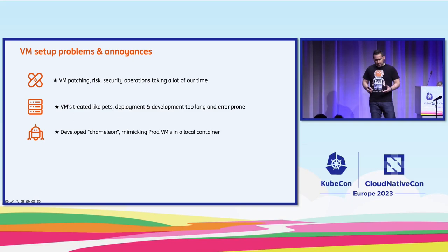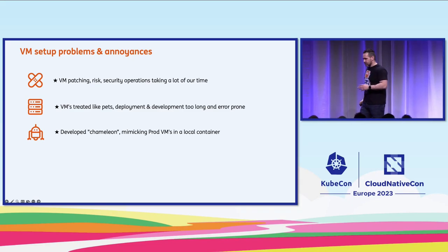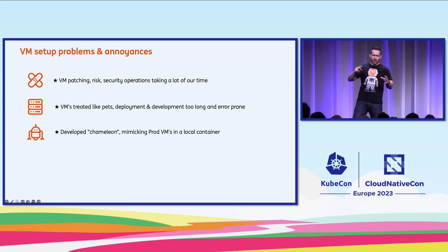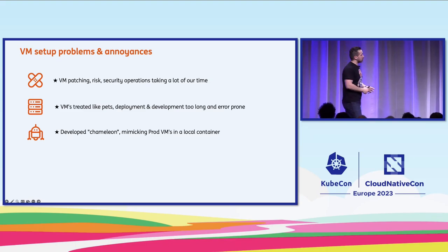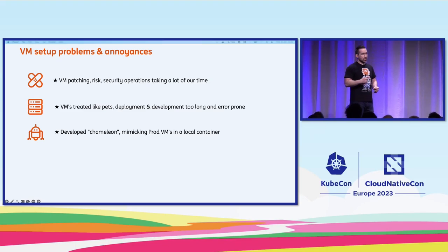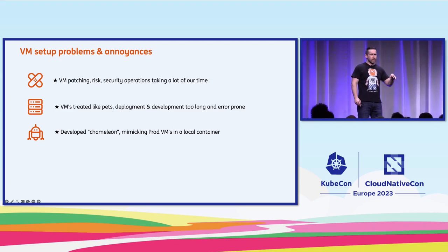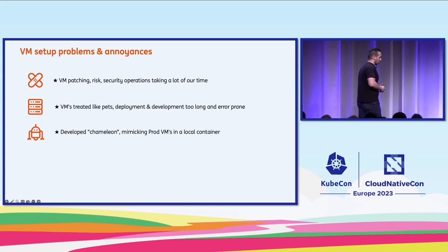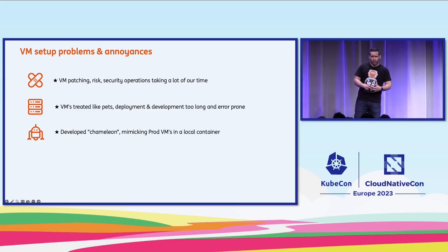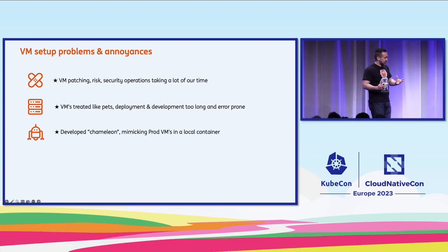To combat this problem, I developed a tool called Chameleon, which allowed us to mimic prod or any other environment's target setup as part of a local container. Now we could be more creative with our code and see if certain things worked for a target environment before those changes even hit that environment. We could even adhere to infrastructure-as-code principles, although in a very limited context.